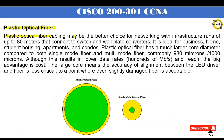Plastic optical fiber cabling may be the better choice for networking with infrastructure runs of up to 80 meters that connect to switch and wall plate converters. It is ideal for business, home, student housing, apartments, and condos. Plastic optical fiber has a much larger core diameter compared to both single-mode and multi-mode fiber, commonly 980 microns to over 1000 microns. Although this results in lower data rates of hundreds of megabits per second and shorter reach, the big advantage is cost. The large core means the accuracy of alignment between the LED driver and fiber is less critical, to a point where even slightly damaged fiber is acceptable.